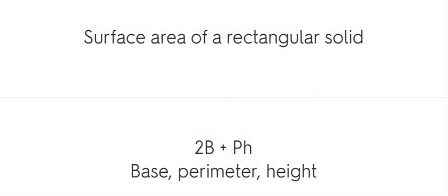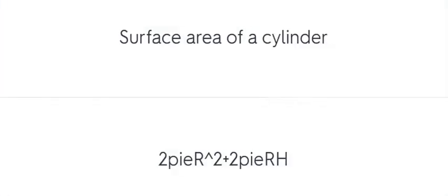Surface area of a rectangular solid: 2B plus pH, base, perimeter, height. Surface area of a cylinder: 2πr squared plus 2πRH.